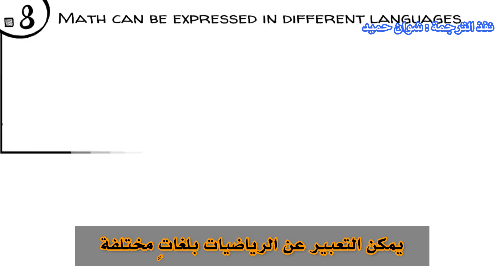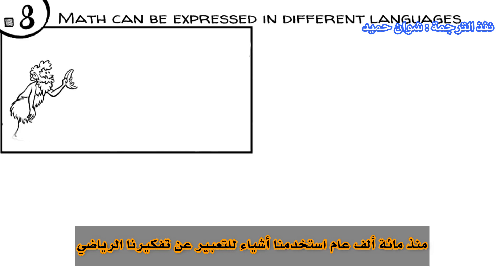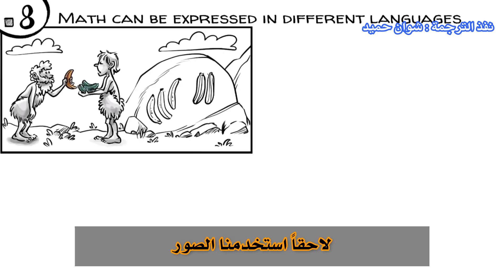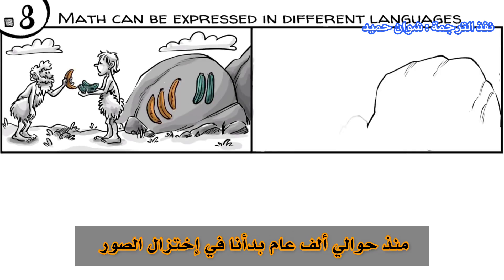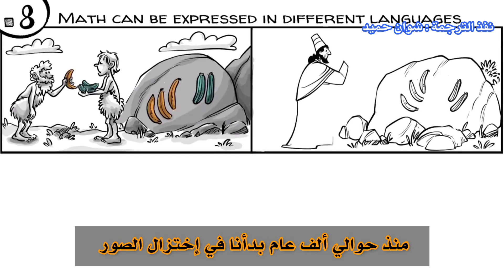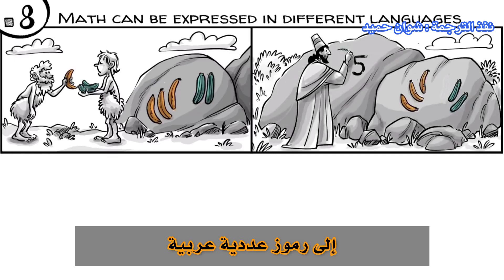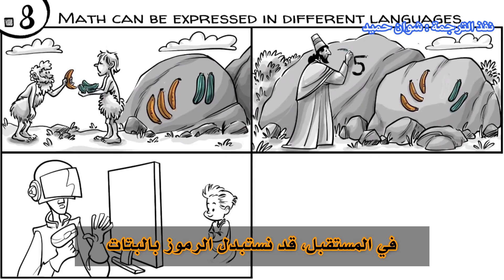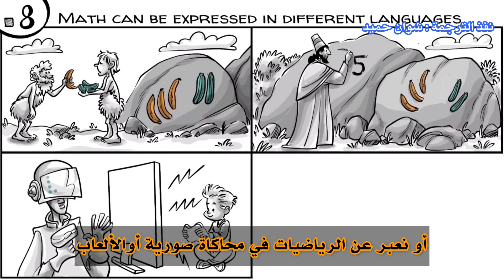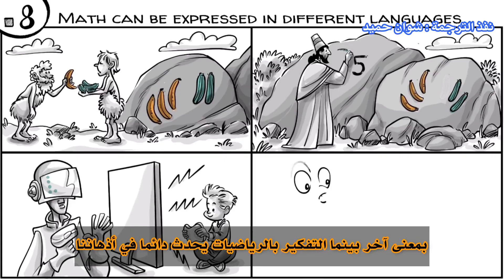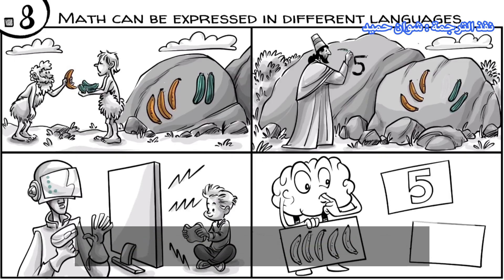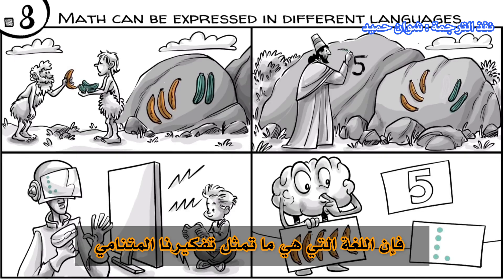Math can be expressed in different languages. A hundred thousand years ago, we used objects to express our mathematical thinking. Later we used images. Around 1,000 years ago, we began to reduce images to Arabic numeral symbols. In the future, we might replace symbols with bits, or express math in graphic simulations or games. While math thinking always happens in our heads, the language that represents our thinking is evolving.